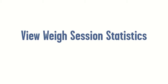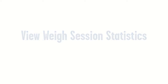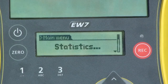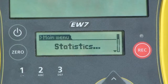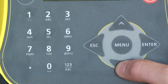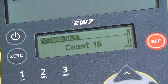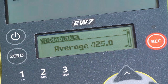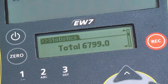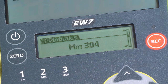You can view the statistics of the current or previous weigh sessions. Press the menu to display statistics and scroll through the list, including the count of the number of animals weighed, the average weight, total weight, and the maximum and minimum weights.